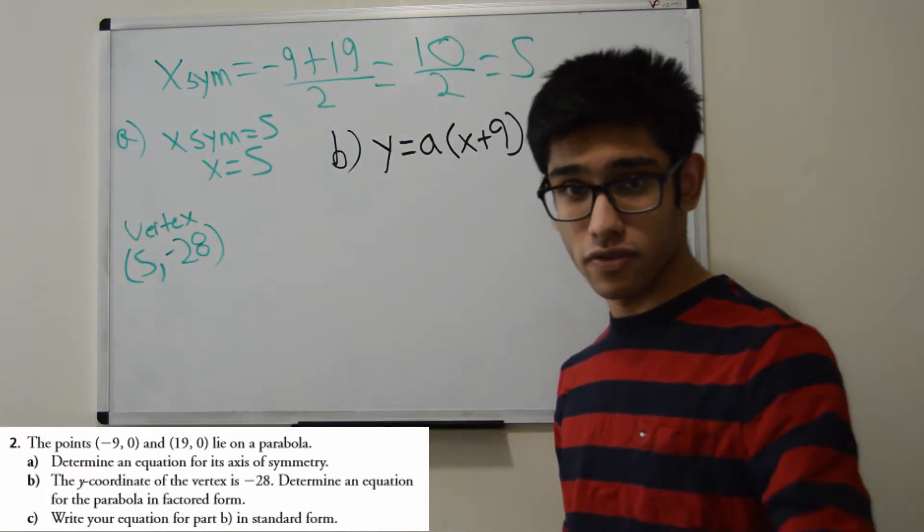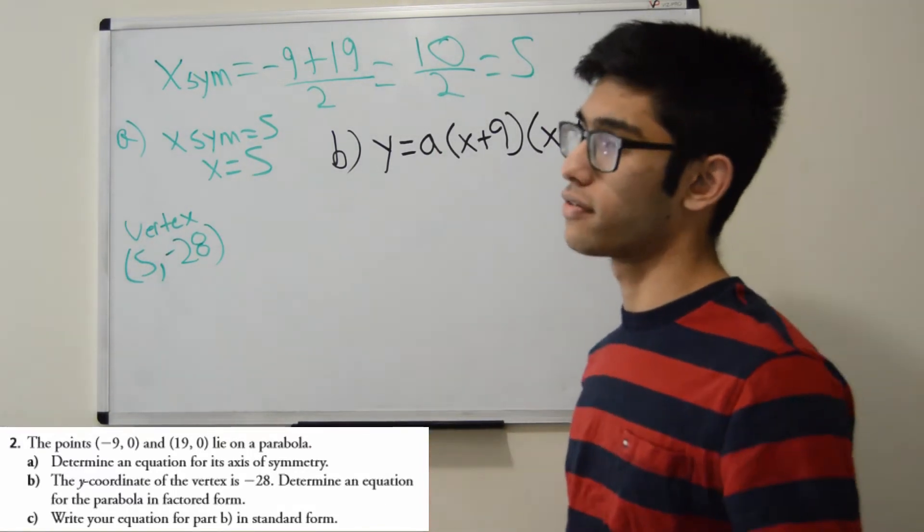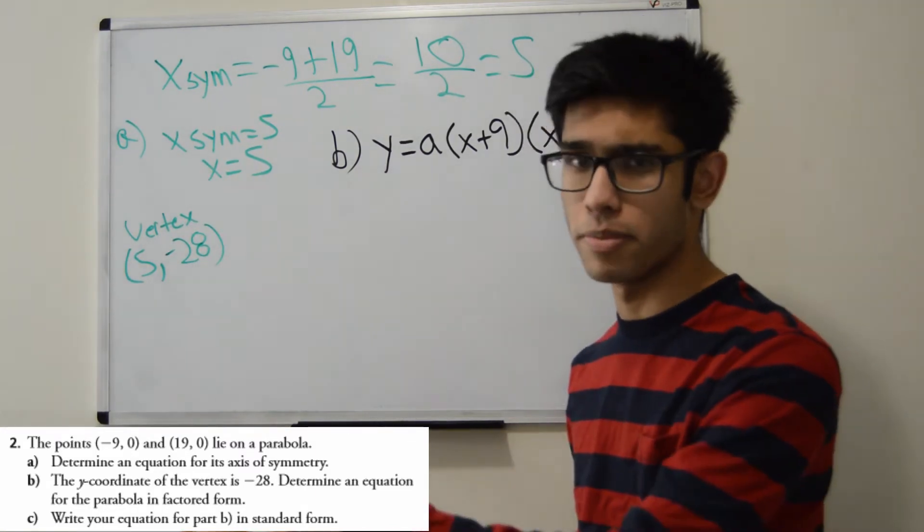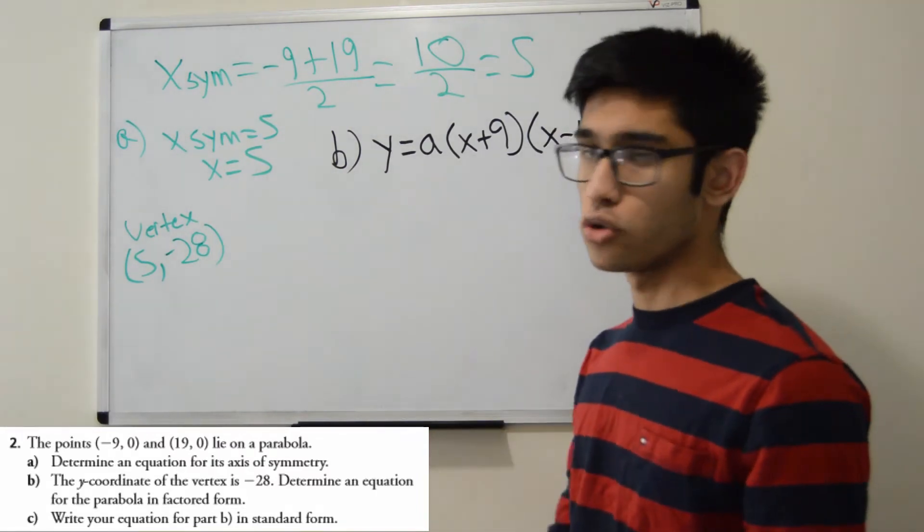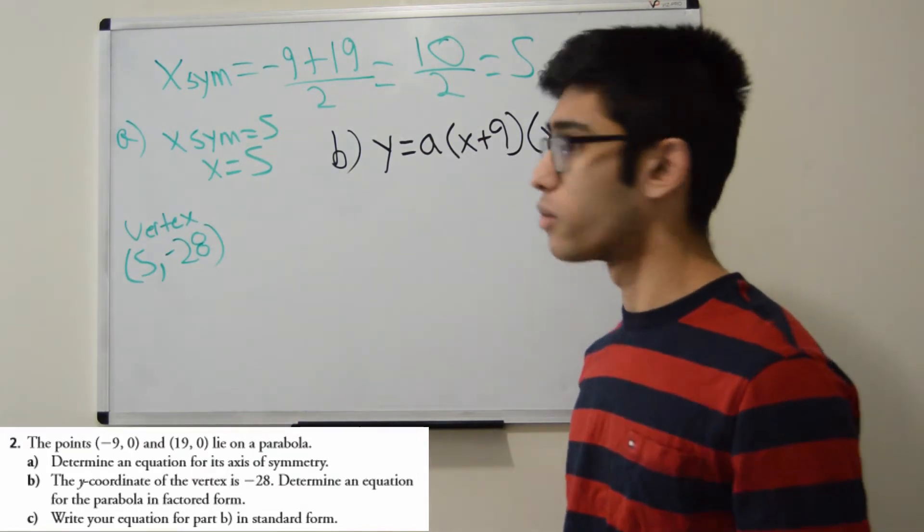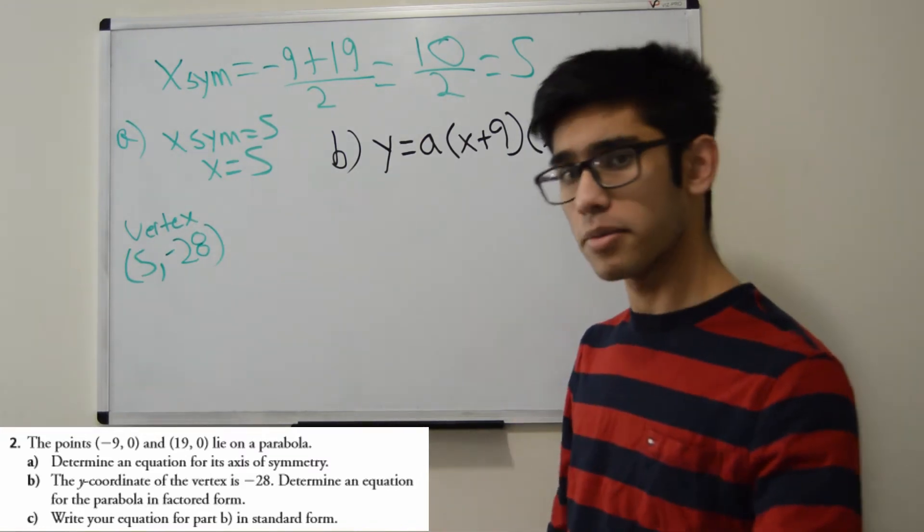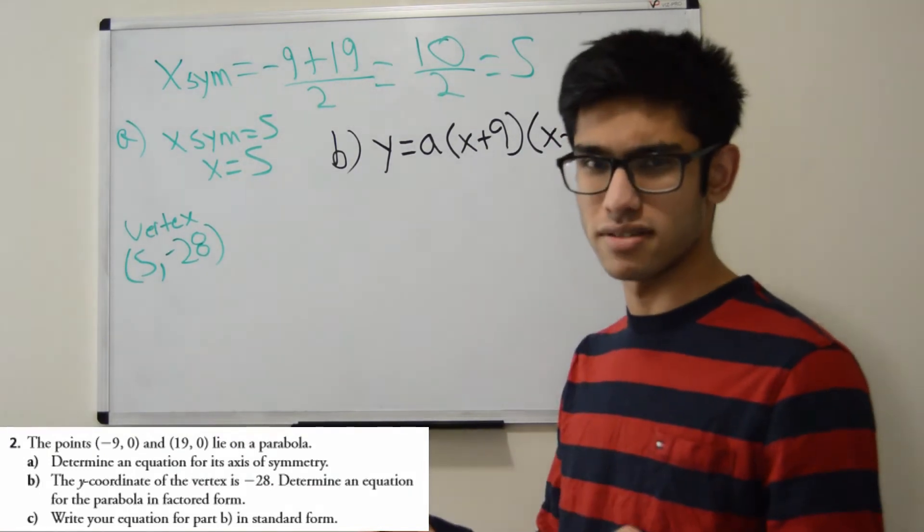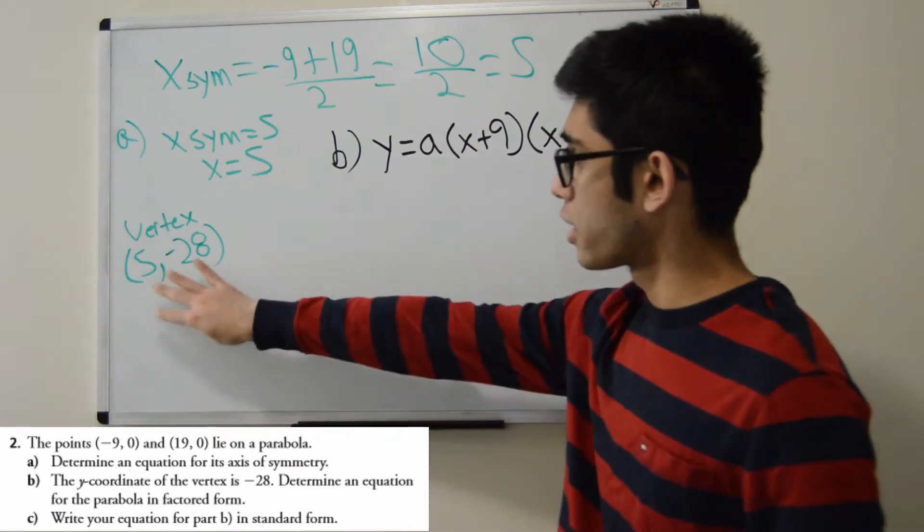How do we find the a value? So this is where it gets kind of confusing for some people. To find the a value, what you have to do is you have to sub in a point. If you remember back to linear relations where you subbed in a point to find the slope or the b, whatever you were looking for there. Now I have to sub in a point to find my a value. Well, what's a point we know for this graph? Well, some of you might say we know a zero. You can use a zero, but it's not always the most reliable. Here we go. Here's a point for us to use. (-5, -28).